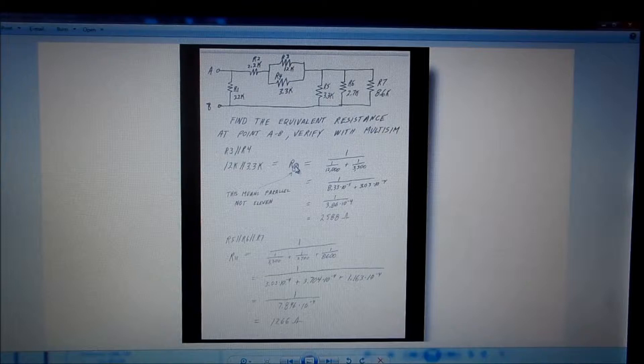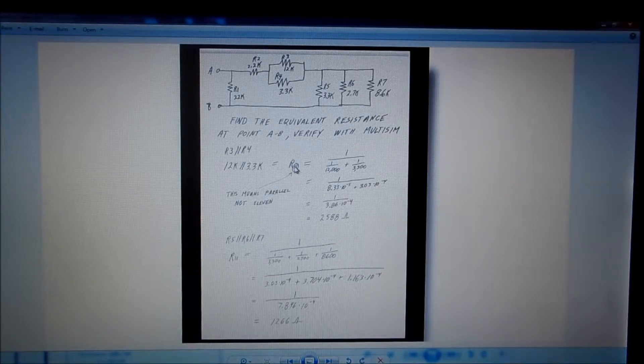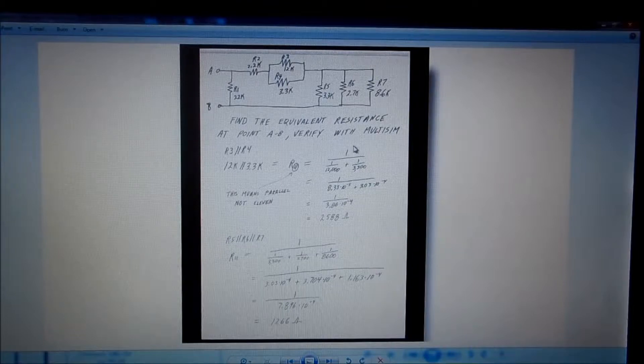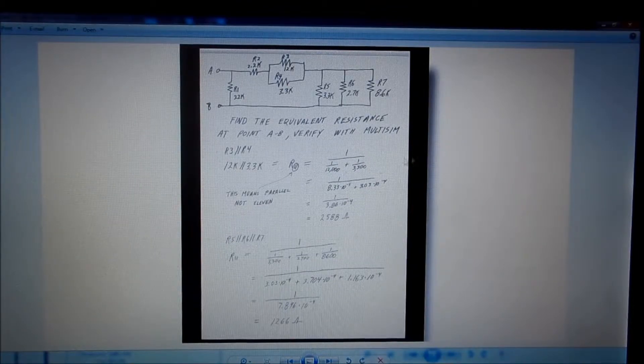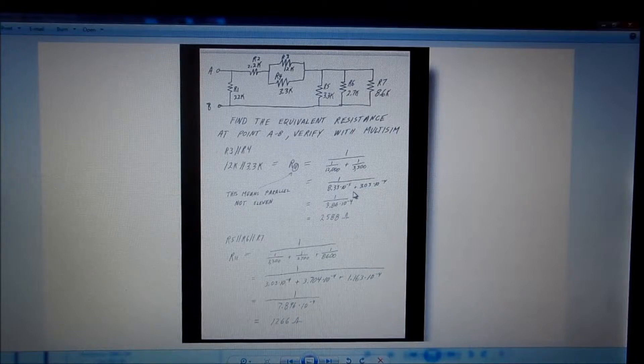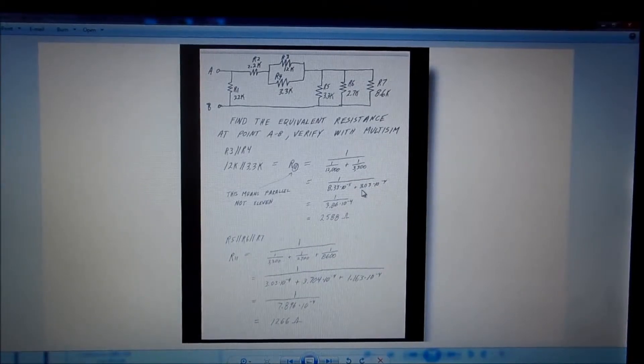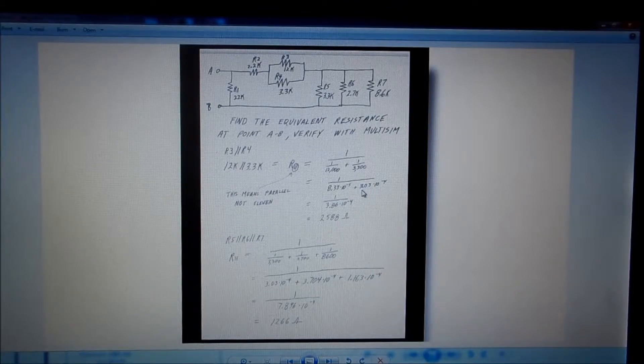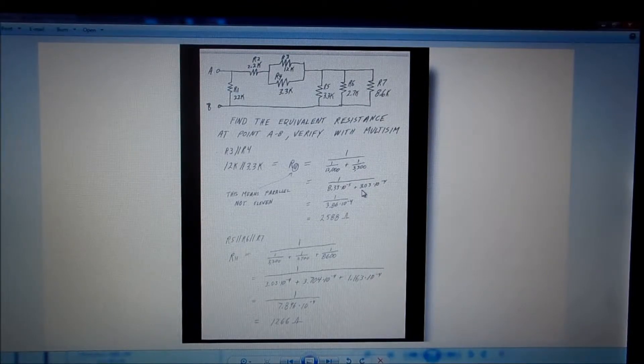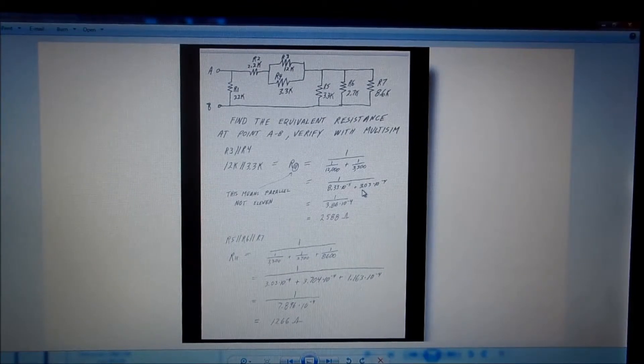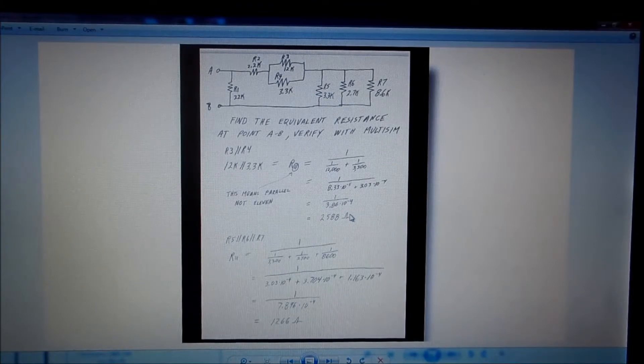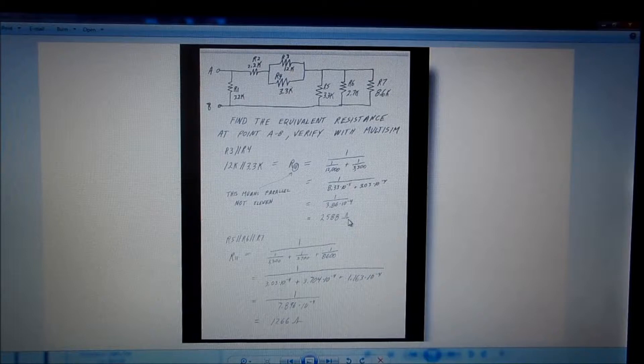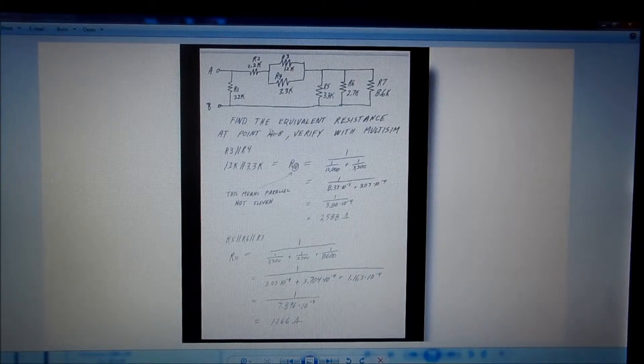And so the parallel resistance, when I write these, I put R parallel, so that means parallel, not 11. And I always do it with the 1 over reciprocal formula. Now there's three formulas you can use. One is if all the resistors have the same value, one is if there's only two resistors, and then there's this formula. This formula works all the time, and if you know how to do it, it's the best way to go. It works in all circumstances.